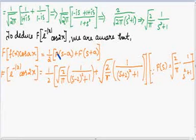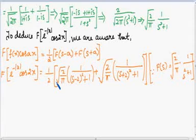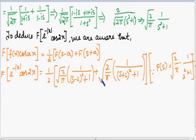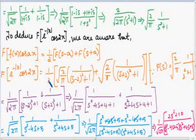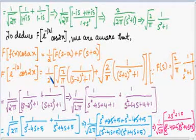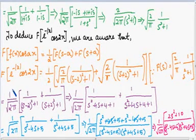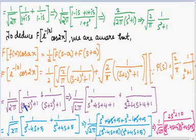For F(s-a): we know F(s) = √(2/π) · 1/(s²+1), so replacing s by s-2 gives √(2/π) · 1/((s-2)²+1). For F(s+a): replacing s by s+2 gives √(2/π) · 1/((s+2)²+1). The factor of 2 in the denominator splits as √2·√2; one √2 cancels with the numerator, giving 1/√(2π) times [1/((s-2)²+1) + 1/((s+2)²+1)].